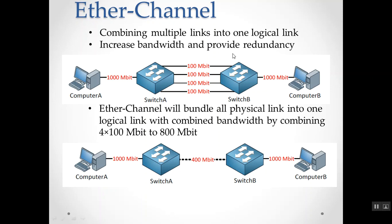Let's combine the multiple links into one logical link. In the network, you can use this logic to create load balancing and share bandwidth. We are going to show you the bandwidth increase. We will use the bandwidth by combining 4 links of 100Mb to get 800Mb. So we will use the bandwidth up to 800Mb.